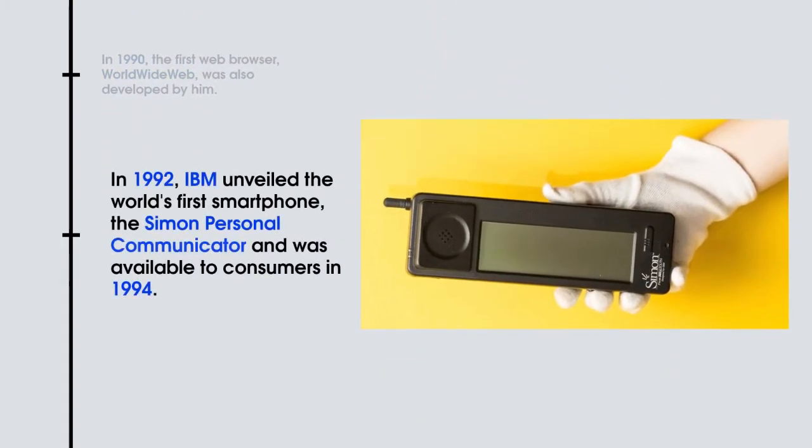In 1992, IBM unveiled the world's first smartphone, the Simon Personal Communicator, and it was available to consumers in 1994.